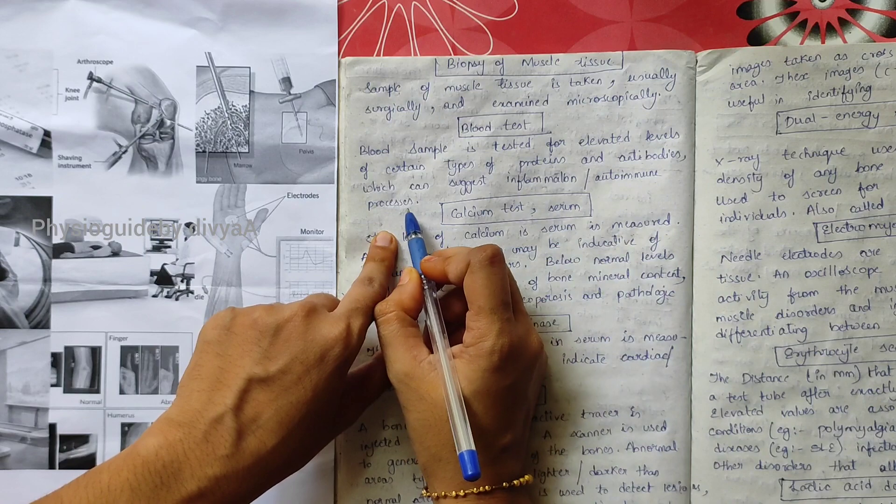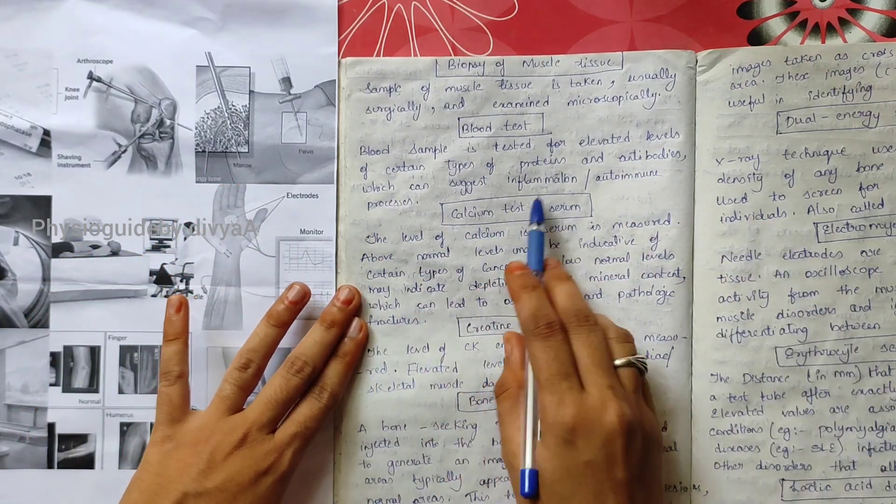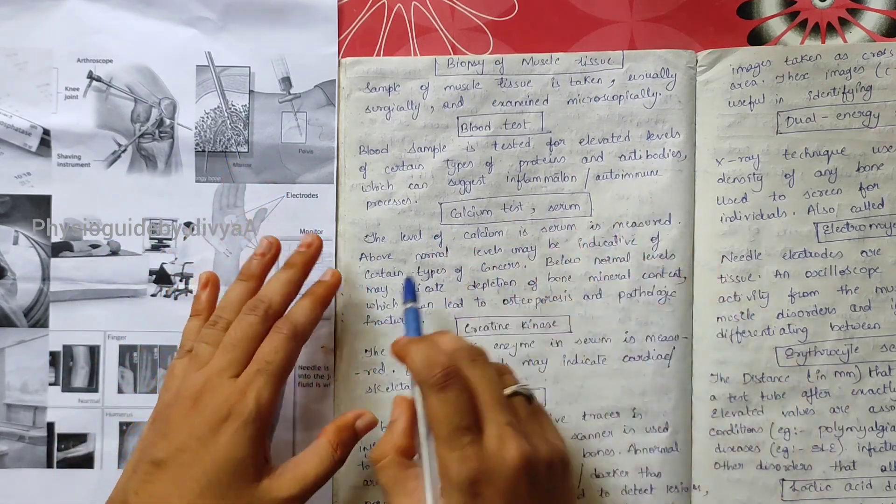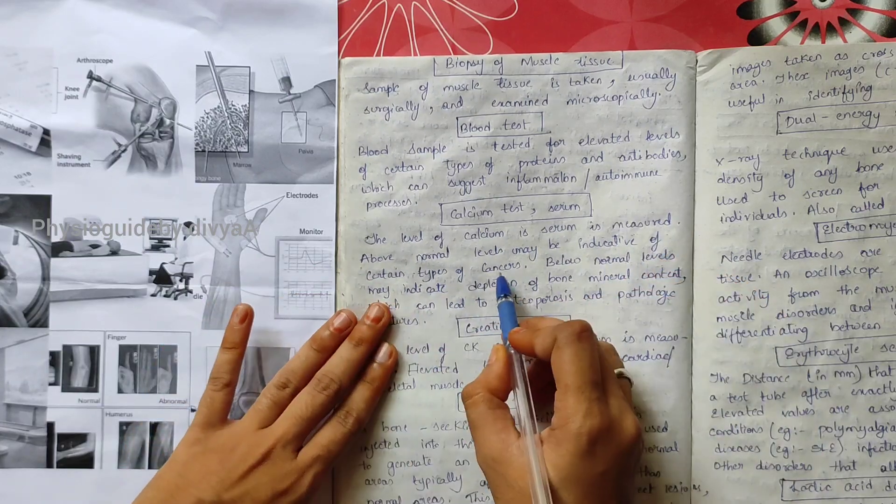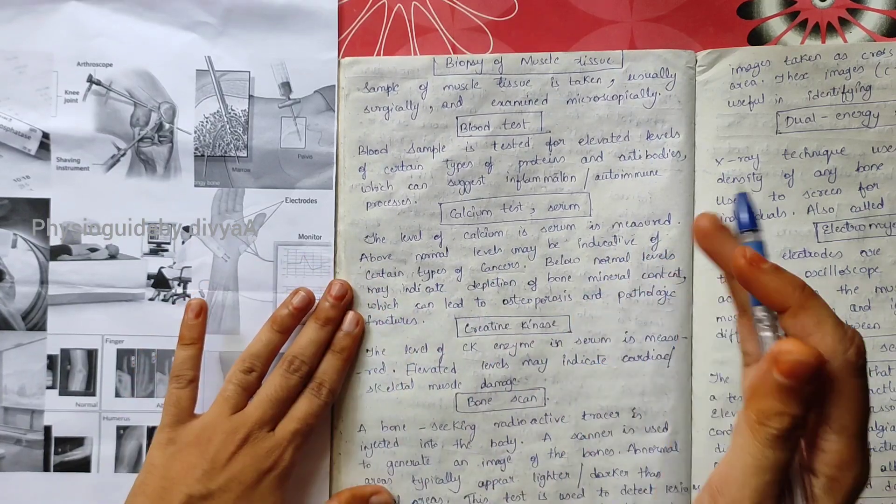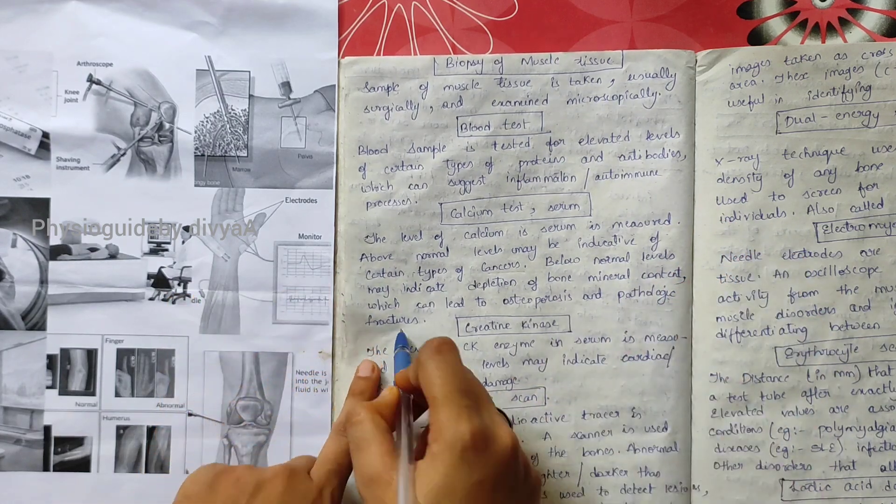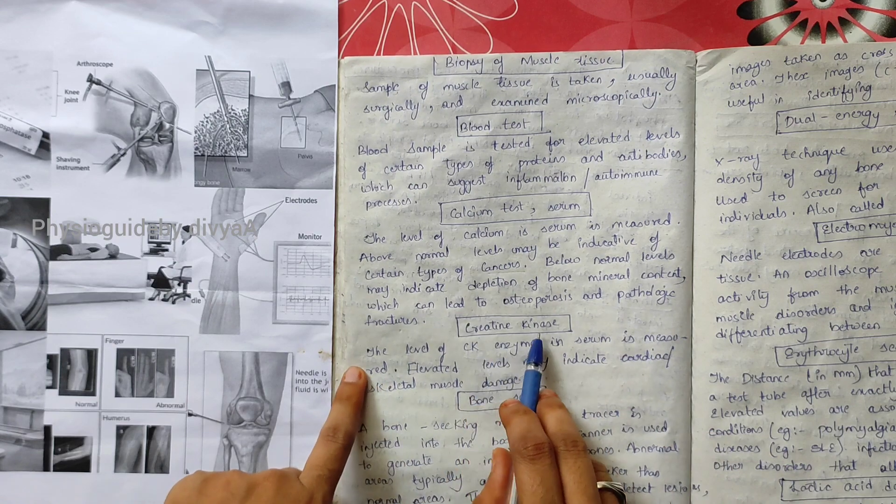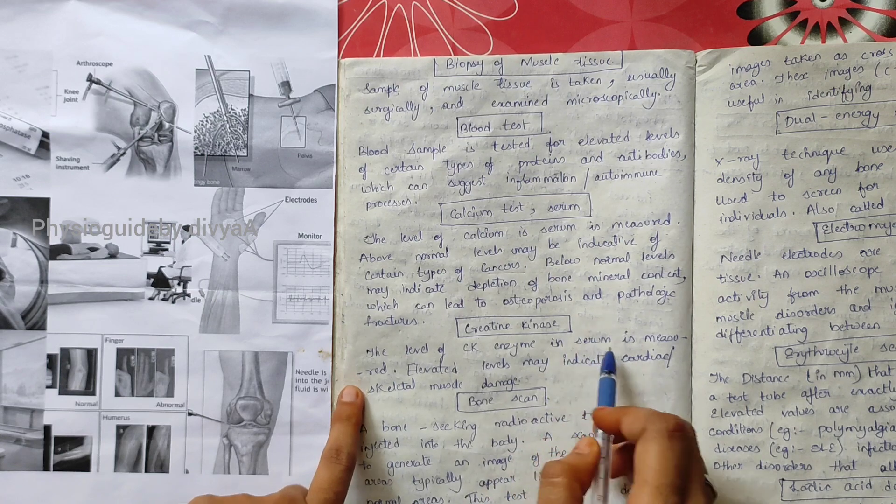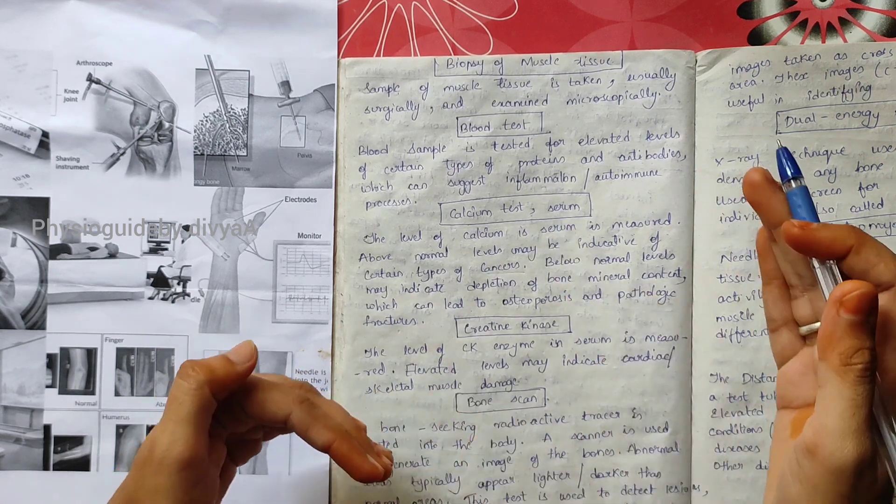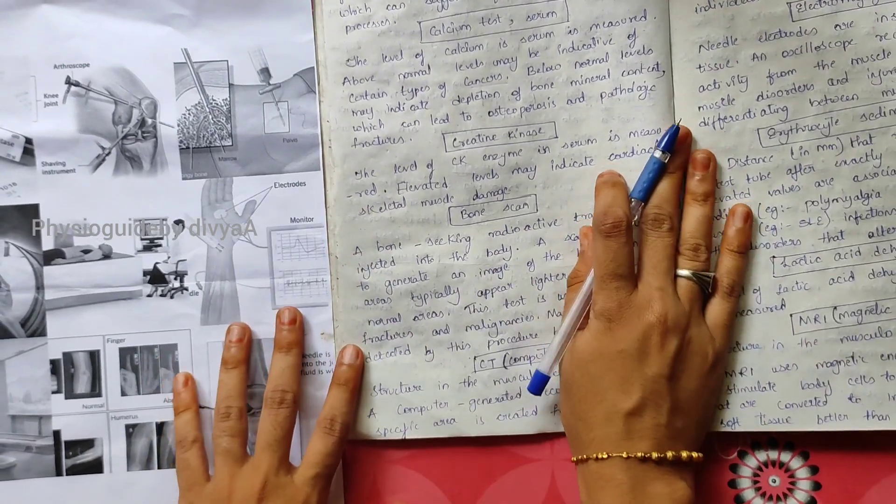Calcium test: serum calcium level is measured. Above normal levels can indicate certain types of cancers. Below normal levels can indicate osteoporosis and pathological fractures. Creatine kinase: the level of creatine kinase enzyme in serum is measured. Elevated levels may indicate cardiac and skeletal muscle damage.